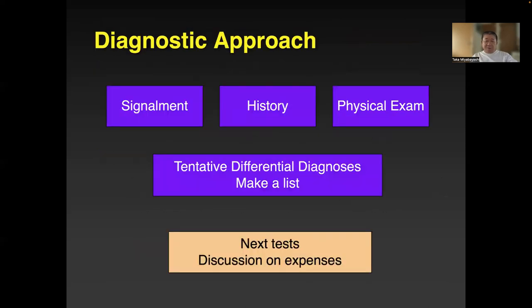The diagnostic approach is the same for any disease. Start with signalment, then very good history taking — what are they eating and that kind of thing — and then physical examination. Don't forget the physical exam. Right now people are starting to use ultrasound as a substitute for physical exam, but ultrasound is not a replacement for physical exam. Consider these three basics and come up with a tentative differential diagnosis.